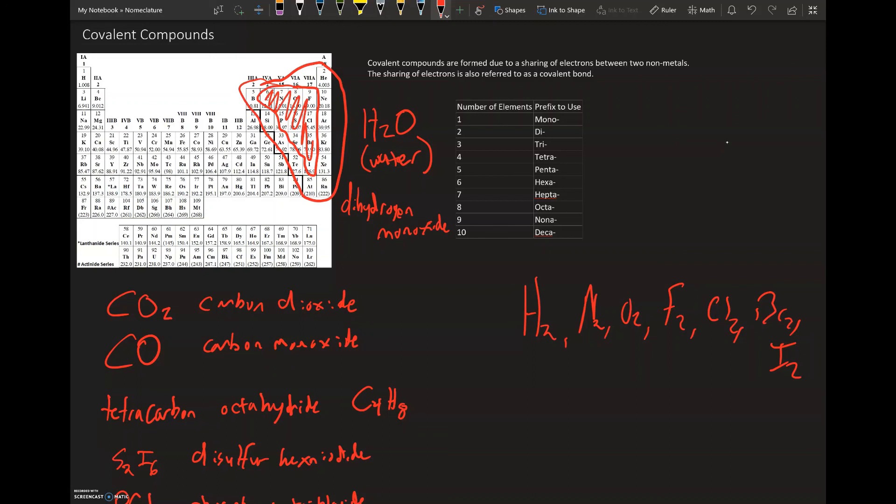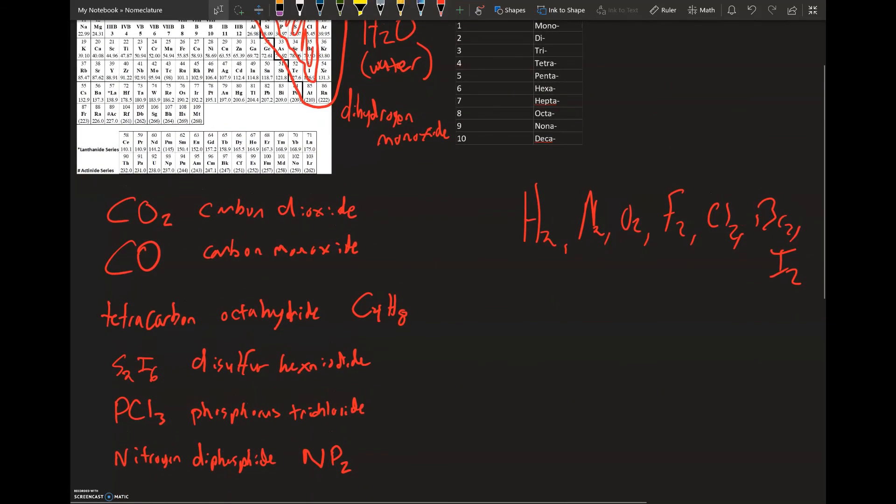Nitrogen, oxygen, fluorine, chlorine, bromine, and iodine. These are just named based off their element names. But when we have two or more non-metals, then we use the prefix.